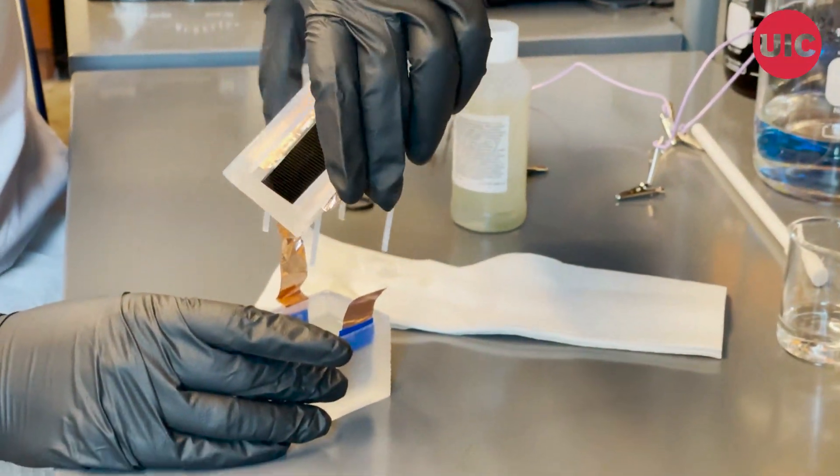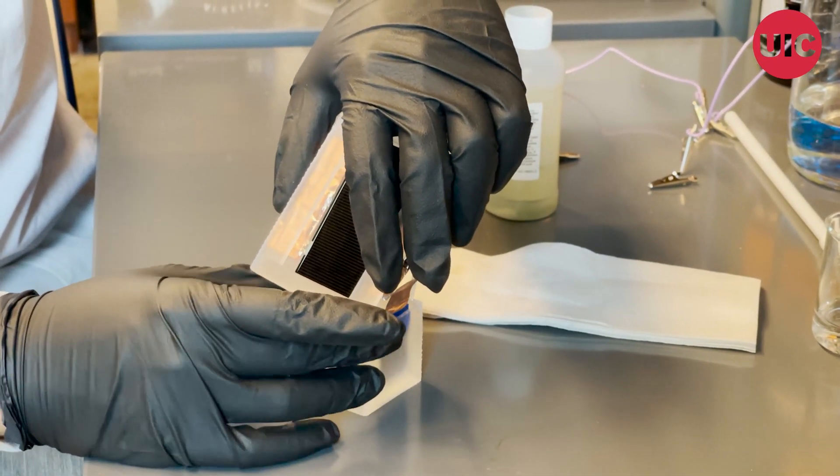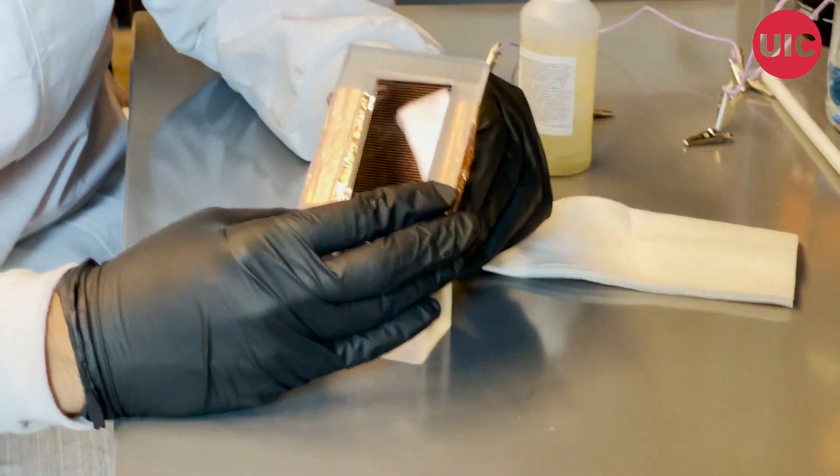Once all of this is done, we will assemble the solar case on top of the electrochemical cell, and that is our complete solar-powered device.